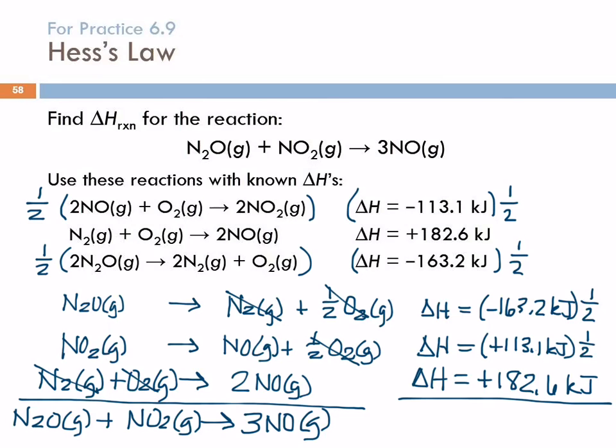Now we're going to add the delta H's. So we've got negative 163.2 times 1 half plus positive 113.1 times 1 half plus 182.6 equals... So delta H is 157. I'm going to have to round up here because I should only have one decimal place with the adding. 157.6 kilojoules.